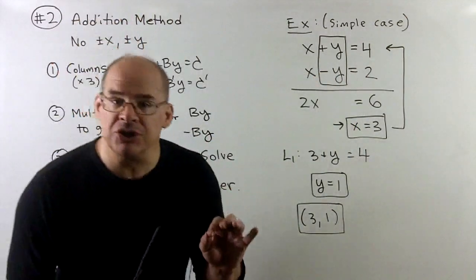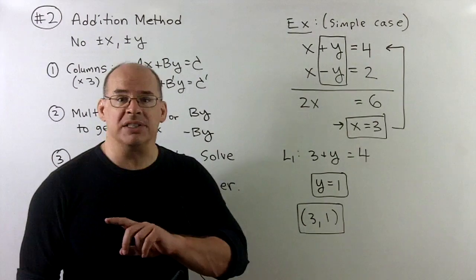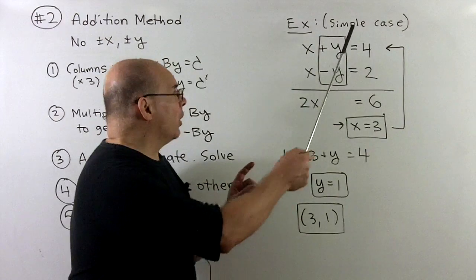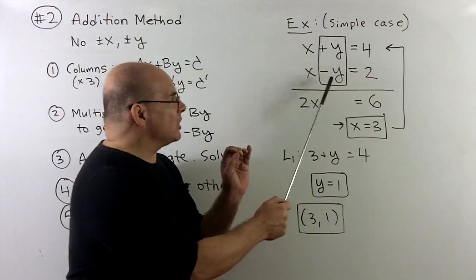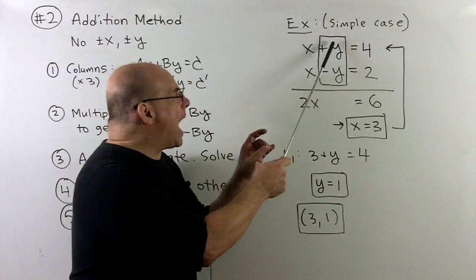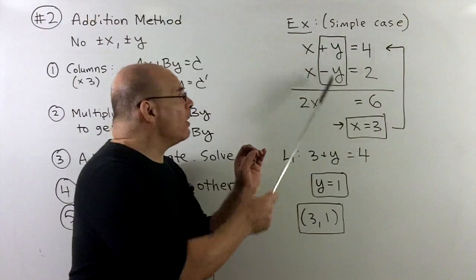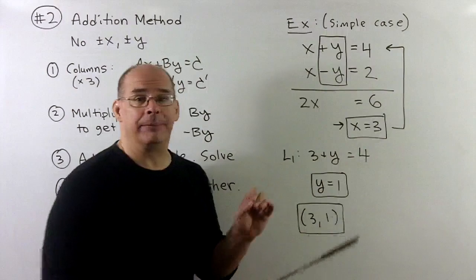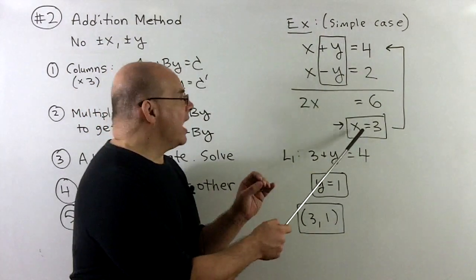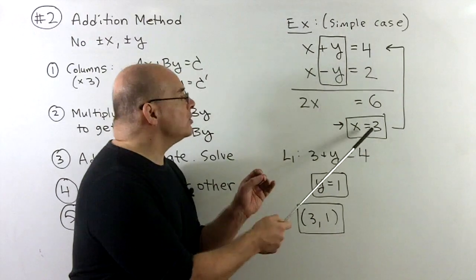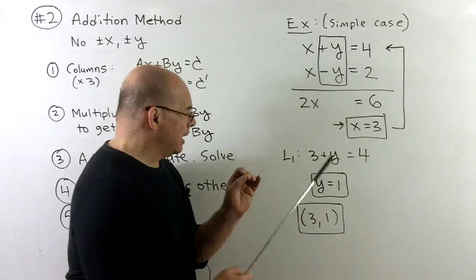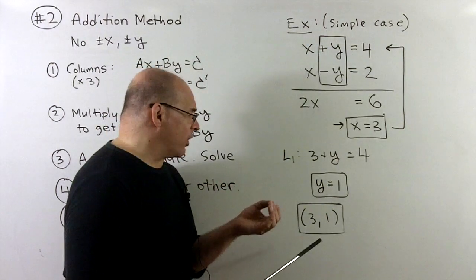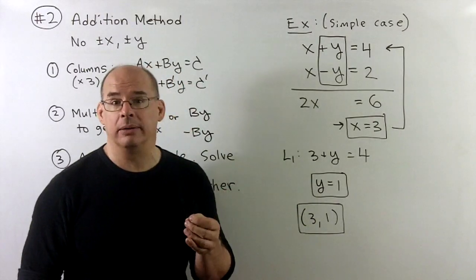Let's first use the example from before to see the mechanics cleanly. We have x plus y equals 4 and x minus y equals 2. I notice y over minus y — so adding down all three columns gives 2x equal to 6, which gives x equals 3. That's half our answer. Substituting 3 back into the first equation: 3 plus y equals 4, so y equals 1. Our answer is (3,1), same as before.